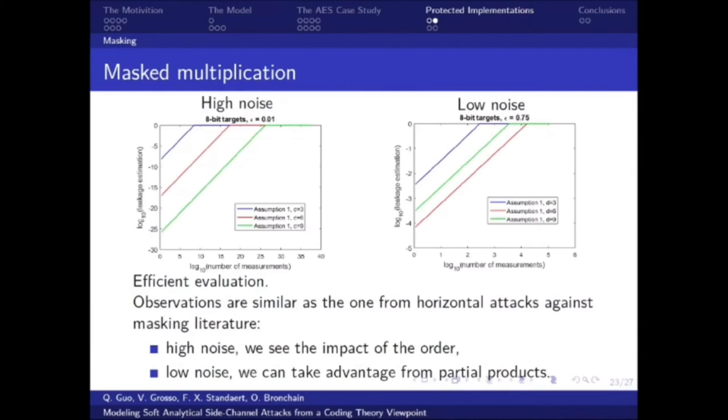On the left part, we have the high noise scenario. In that case, we can see that the distance between the lines seem to be similar from 3 to 6, or 6 to 9. And that's what we see is the impact of the order. When we add 3 to the order, we have the same impact on the leakage bound. Now, if we look at low noise, that is on the right part, we can see that the distance between the lines are smaller from 6 to 9 than from 3 to 6. And that's where we can take advantage of partial products. And actually, it's what was shown in the horizontal attack against masking literature, is that it's efficient, or we can obtain more information when we are in low noise setting. In high noise, it's much more complicated to exploit this information.